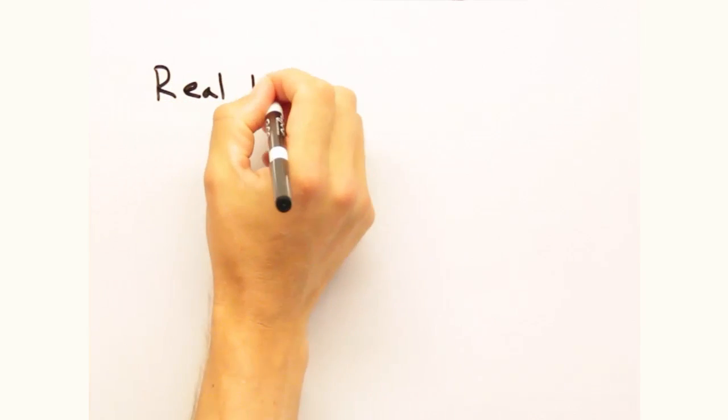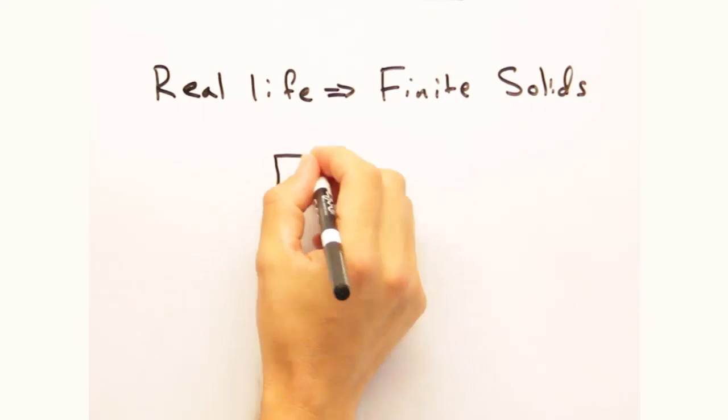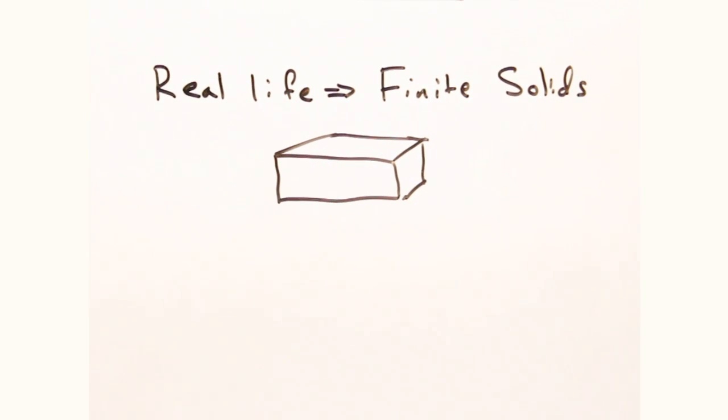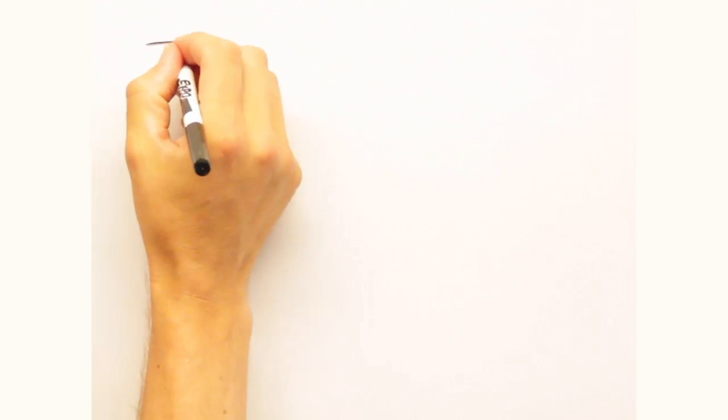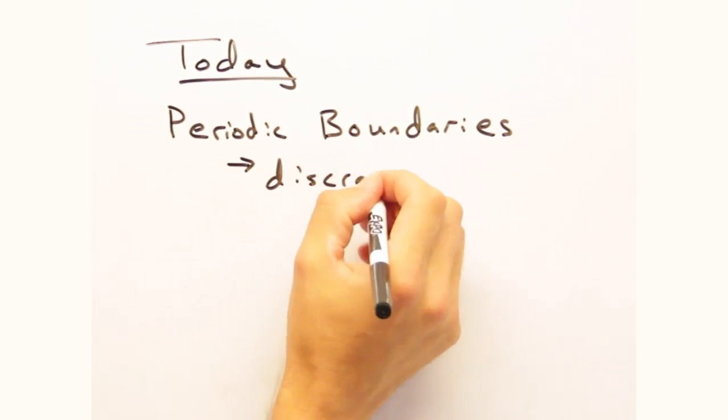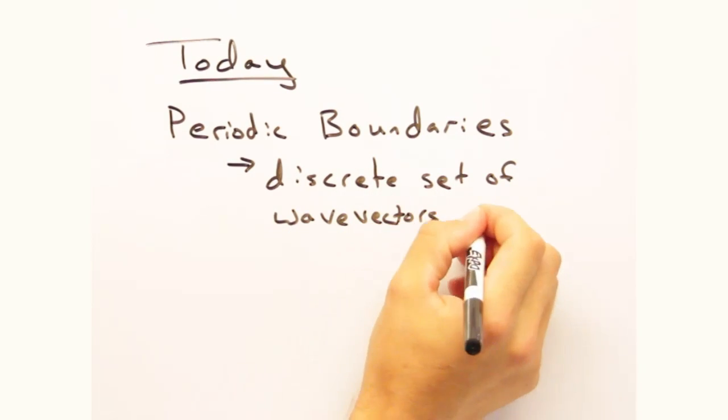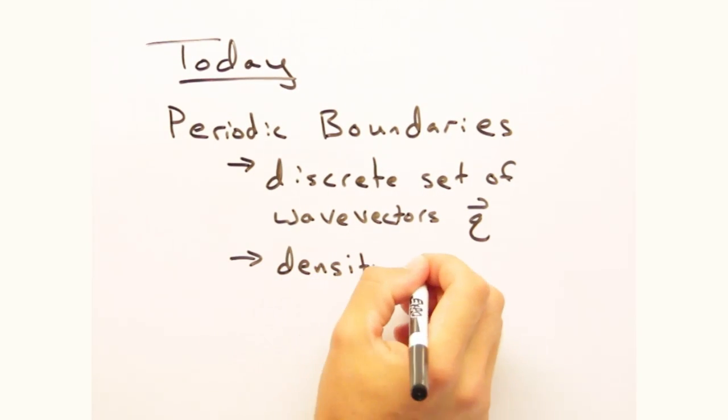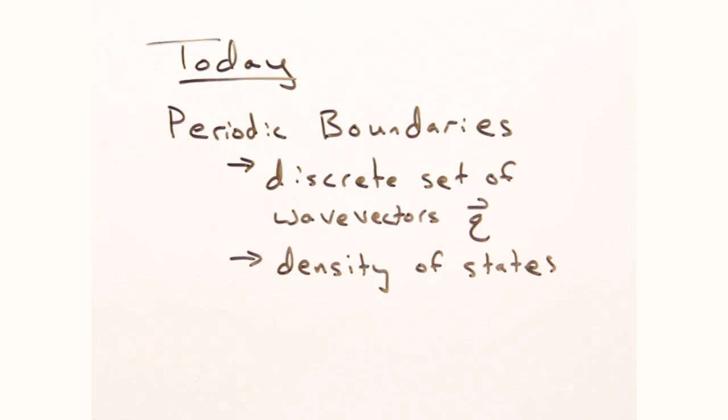Up until now, the solids we've been using are infinite. But in real life, we have finite solids, which have surfaces that we have yet to deal with. And if that's okay with everyone, we're going to continue to ignore surfaces. Instead, our goal today is to treat finite solids as periodic structures macroscopically, use that to explain the discreteness of our Q vectors, and introduce a term called the density of states and explore its implications.